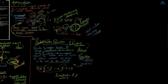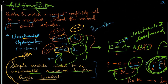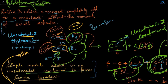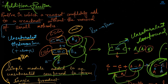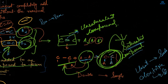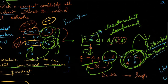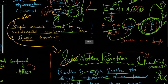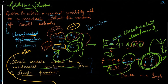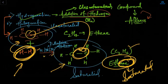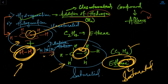So that was the addition reaction and substitution reaction. Quick review: addition means unsaturated combining to form a single product which is a saturated compound. In addition we discussed two subtopics: hydrogenation and halogenation.